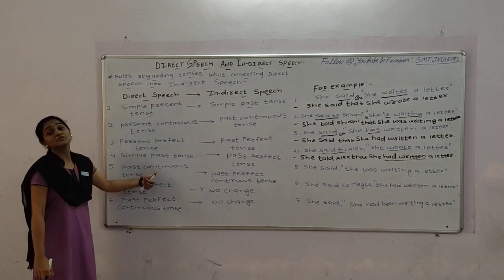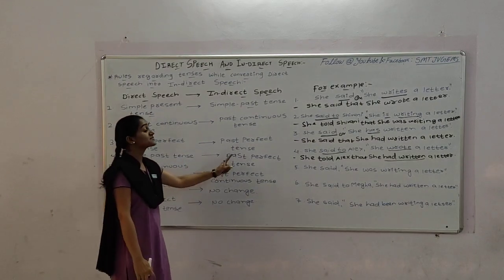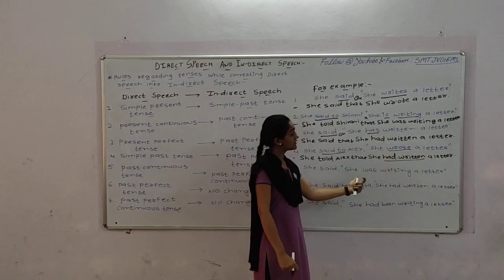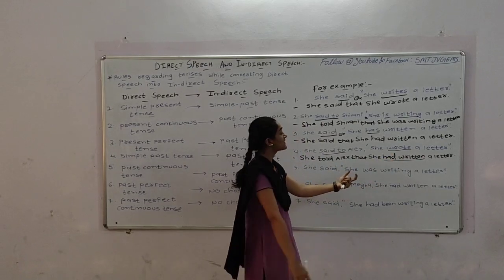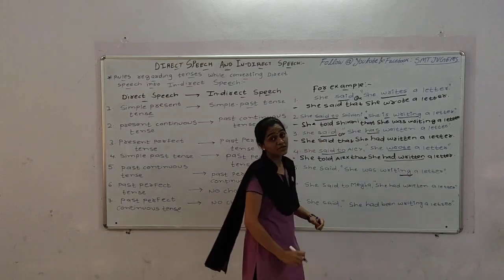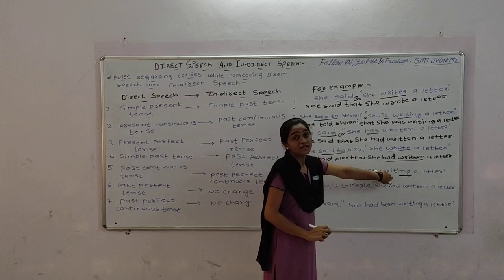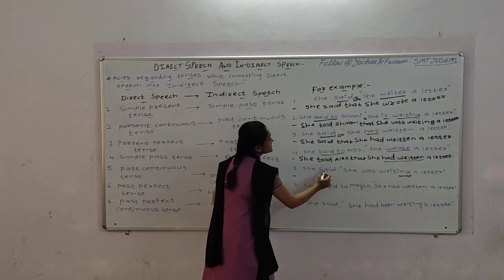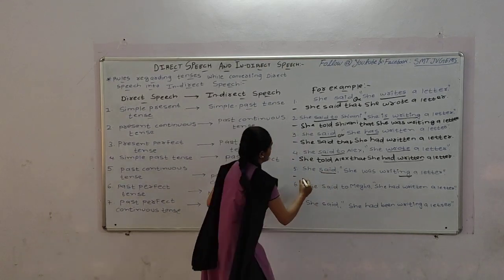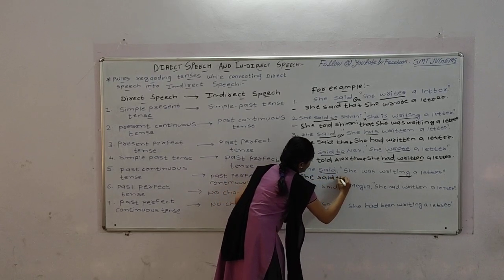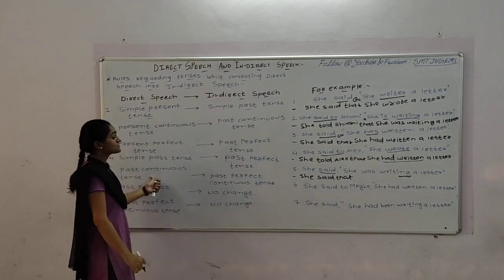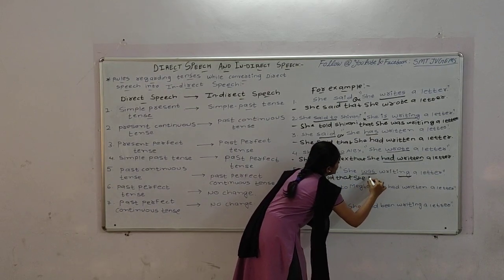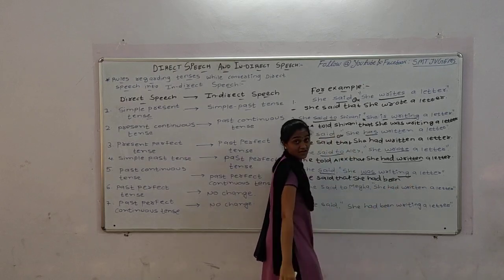The fifth tense is past continuous tense. Past continuous tense changes into past perfect continuous tense. For example: she said, she was writing a letter. We can identify continuous tense by the '-ing' form given. She said that — now the tense is in past continuous, so we convert it into past perfect continuous. She said that she had been writing a letter.